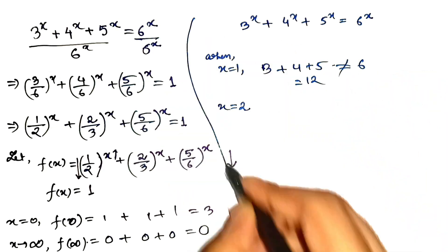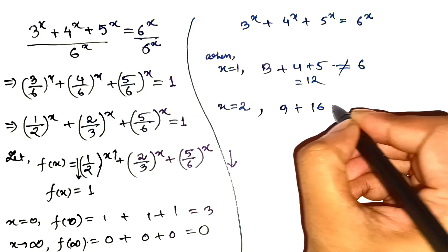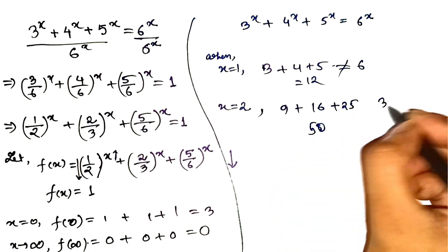Test x equals 2. Left side is 9 plus 16 plus 25, that's 50. Right side is 36. Still too big.